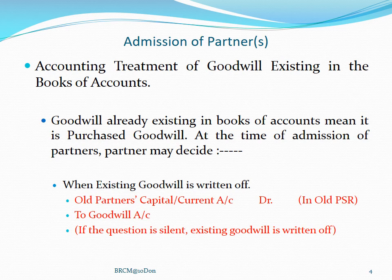Partners decide two things: either the existing goodwill is written off, or the current goodwill is retained at the same value in the books of accounts. If the question is silent on this matter, then existing goodwill is written off. We will write off the existing purchased goodwill that is in the books of accounts, and write it off against old partners' current or capital accounts in their old profit-sharing ratio. The entry will be: old partners' capital or current account debited to goodwill account in old profit-sharing ratio.